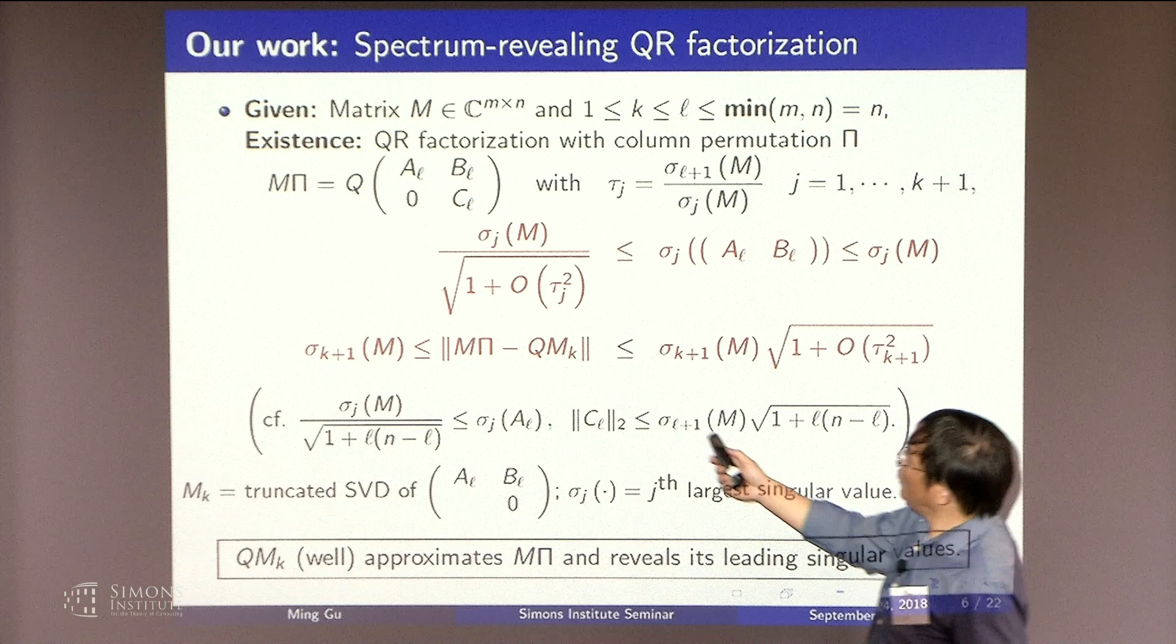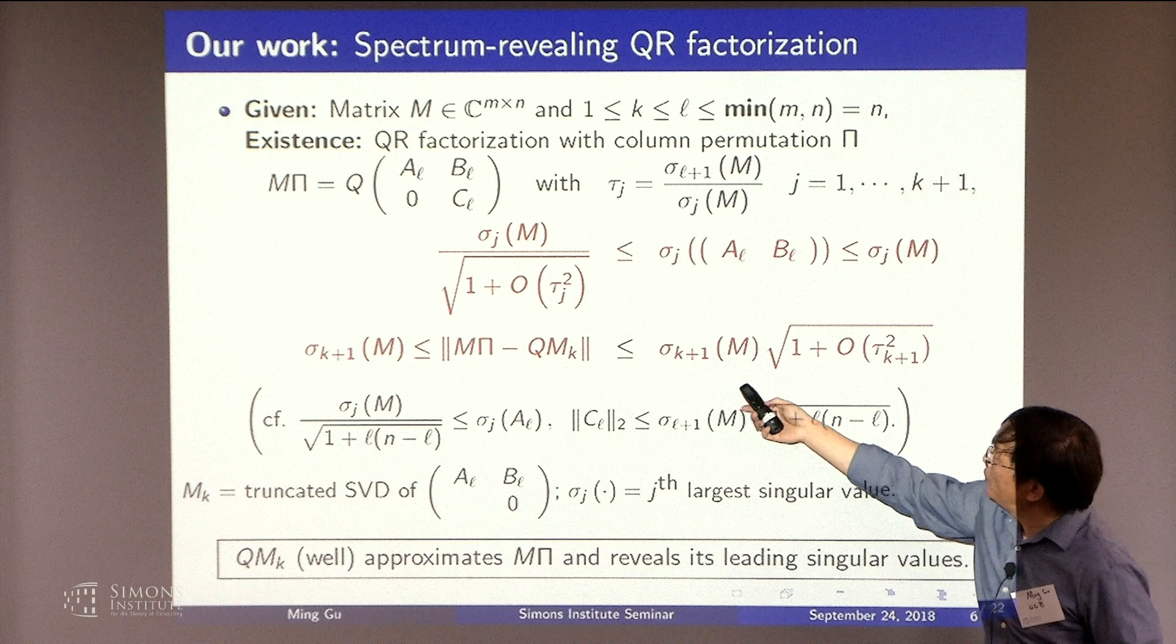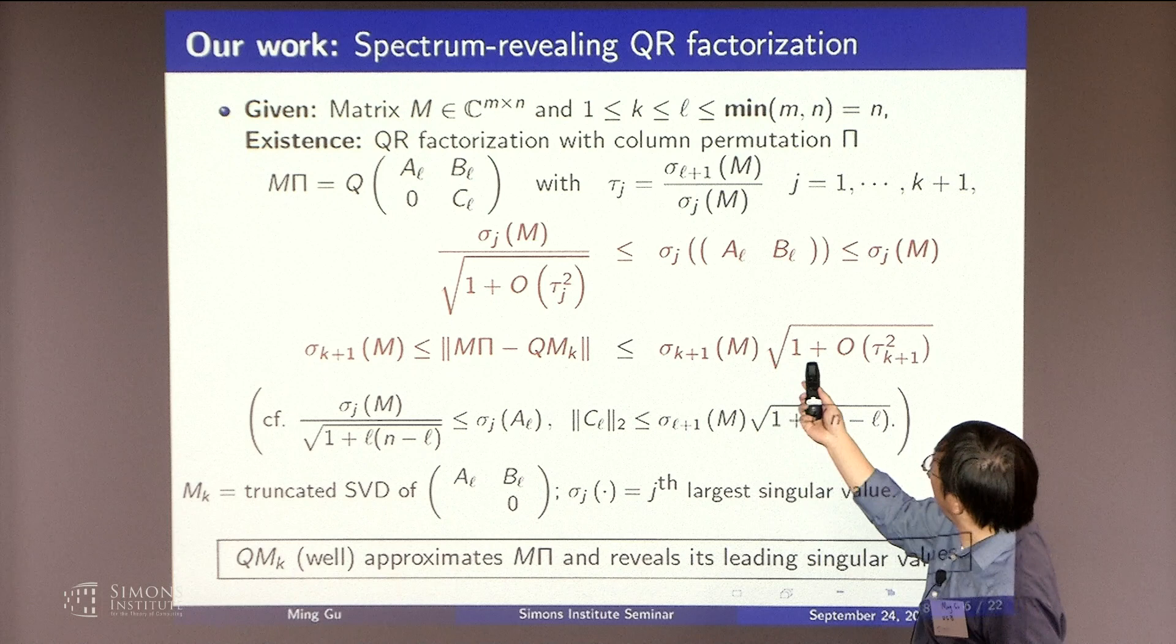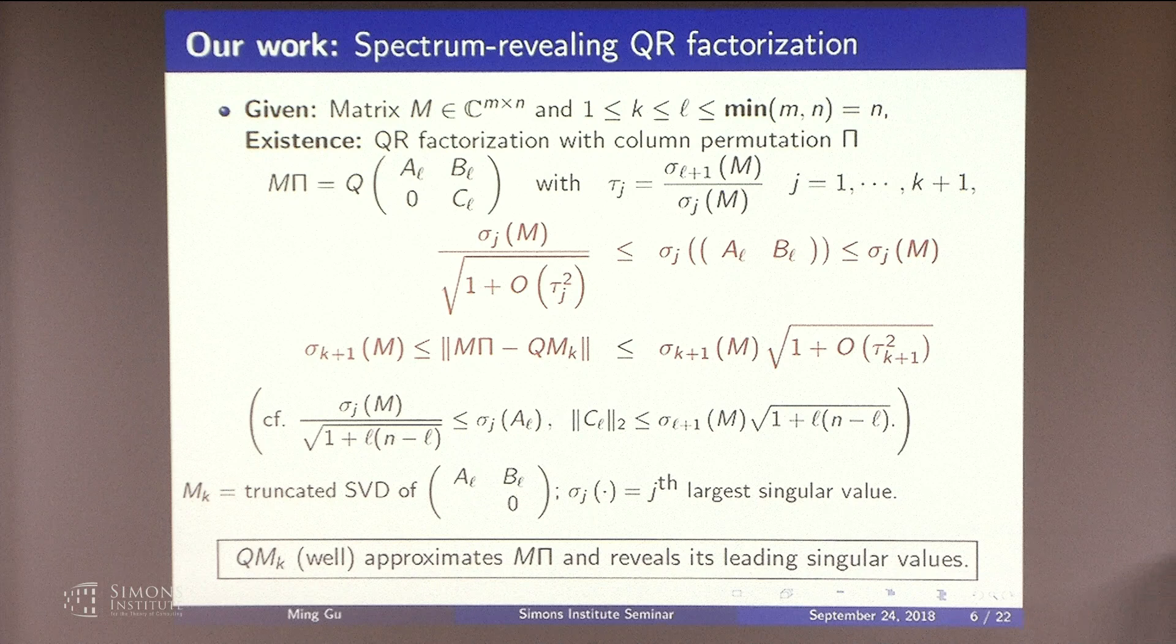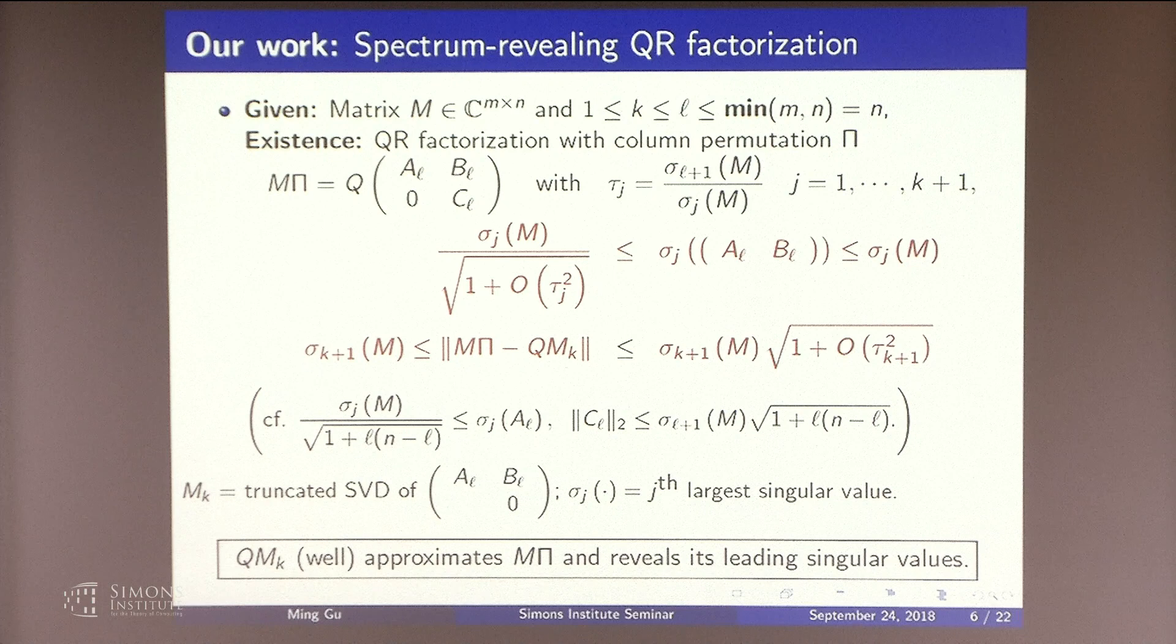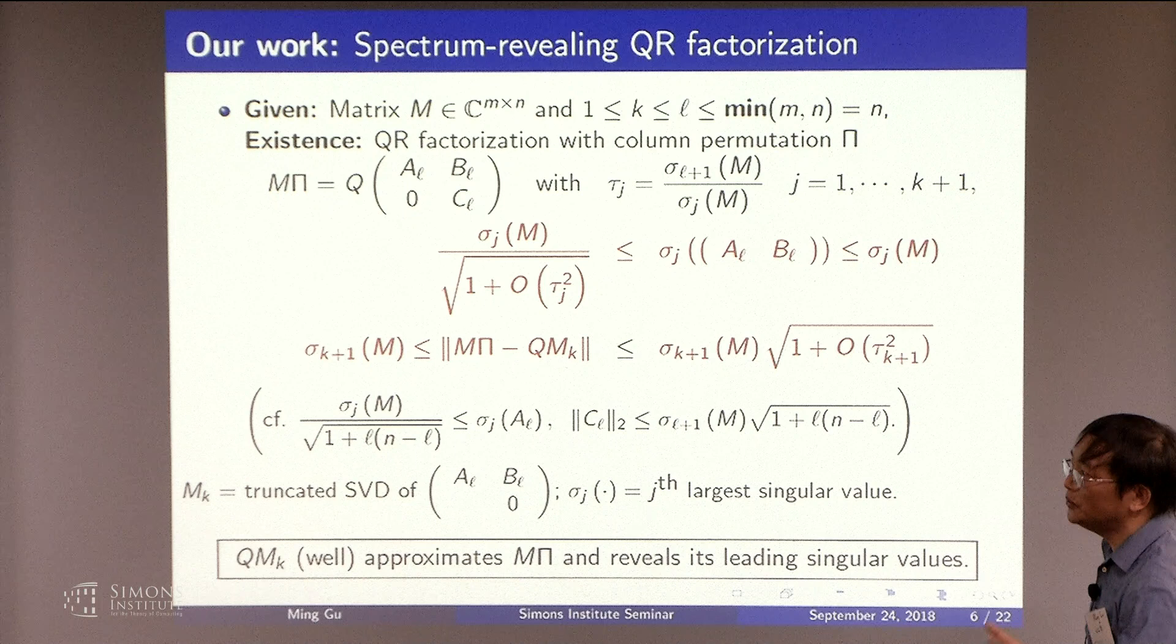And if you want to do a low rank K approximation, then the error bound would be bounded below and above by these things. And the only thing extra would be this. Again, this is a tau dependent constant. So you have K plus 1, the K is the rank. So if you have a case where your singular values decay quickly, then even the tau K plus 1 could be very small. In that case, you would get a very good approximation, despite the fact that you're only doing QR factorization.